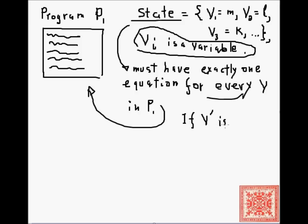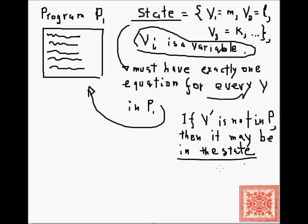If some variable V' is not in P, then it may or may not be in the state. We may have some variables in the state that are not mentioned in the program. Those variables are essentially for our information only, but we must have exactly one equation for every variable in the program.